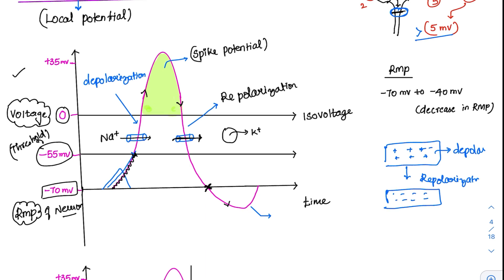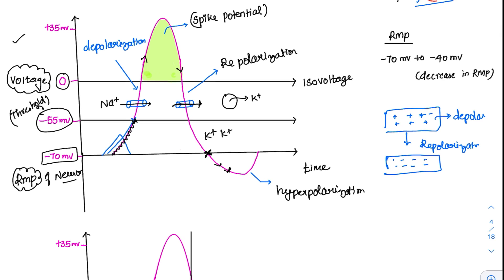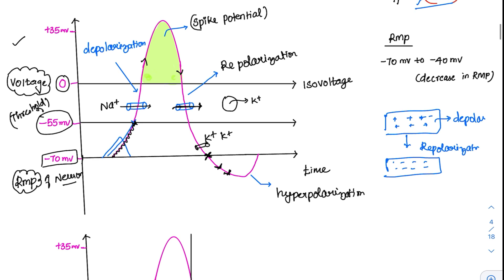After repolarization, the potential goes below the baseline. This event is called hyperpolarization. The reason for hyperpolarization is that potassium channels are slow to open and slow to close. Many potassium channels are open during repolarization, and by the time they close, more potassium is lost, creating more negativity. The sodium-potassium ATPase then corrects all these ionic movements and brings the membrane back to the resting state, which is why RMP is maintained by the sodium-potassium ATPase.